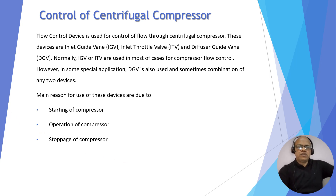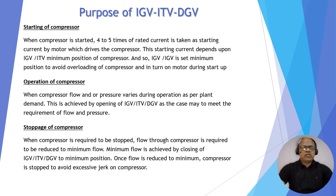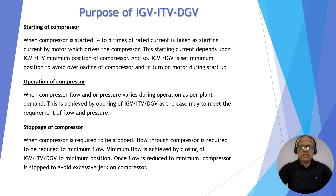The main purposes for use of these devices are: starting of compressor, stopping of compressor, and operation of compressor. When the compressor is started, four to five times the rated current is taken as starting current by the motor which drives the compressor. So if the IGV is more opened or if there is no IGV, the starting current would be much higher, which will cause damage to the motor. IGV is used to minimize the flow through the compressor so that the load is within a controllable limit, and the motor can easily start the compressor.